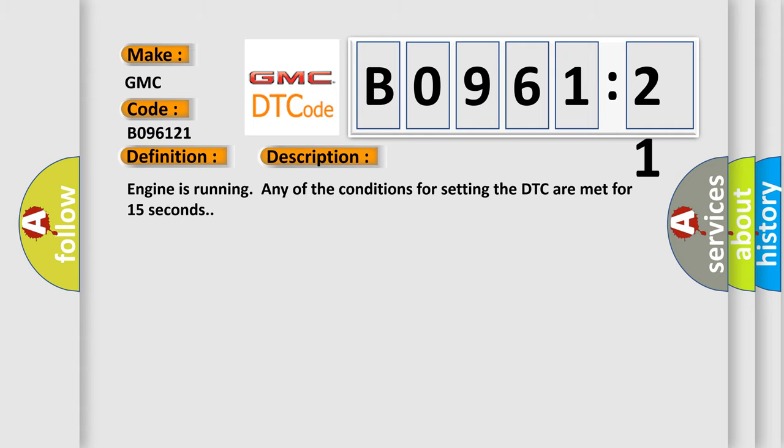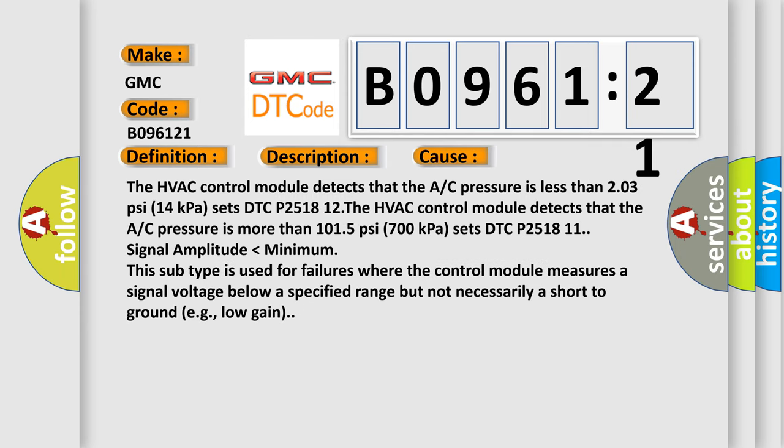Engine is running and any of the conditions for setting the DTC are met for 15 seconds. This diagnostic error occurs most often in these cases: The HVAC control module detects that the A/C pressure is less than 2.03 PSI (14 kPa) sets DTC P2518 12. The HVAC control module detects that the A/C pressure is more than 101.5 PSI (700 kPa) sets DTC P2518 11.